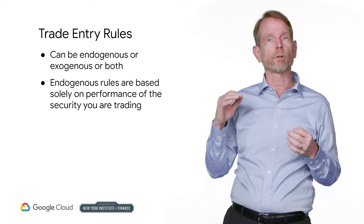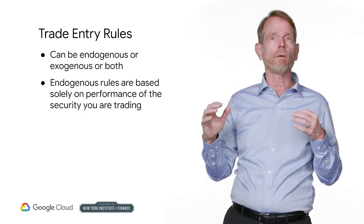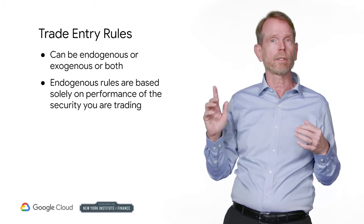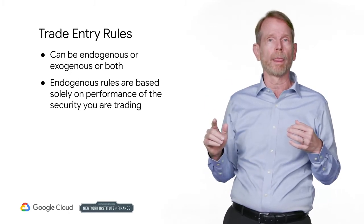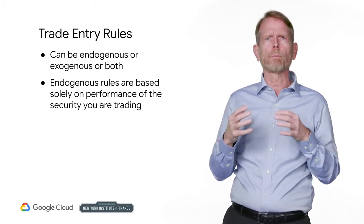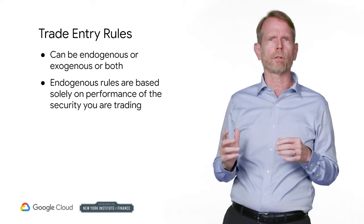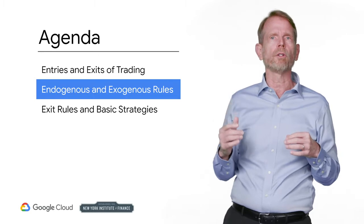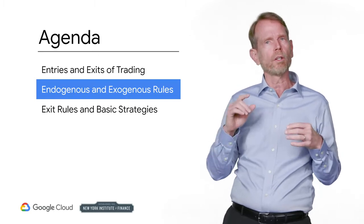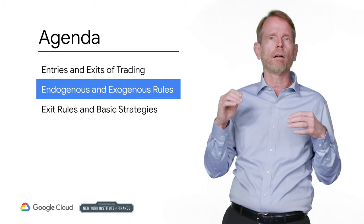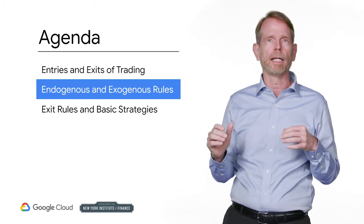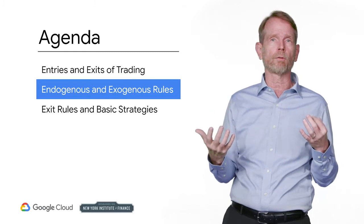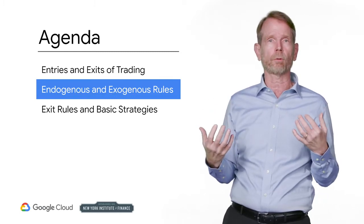Objectivity requires a rule for trade entry. Overall, there can be two types of entry rules. The first is an endogenous entry rule, which means you use a rule based purely on the security you're trading. In this section, we are going to explore the use of endogenous rules when you only have access to price and volume data on the asset you're trading, and exogenous rules where you are able to improve your trading performance with other data sources.